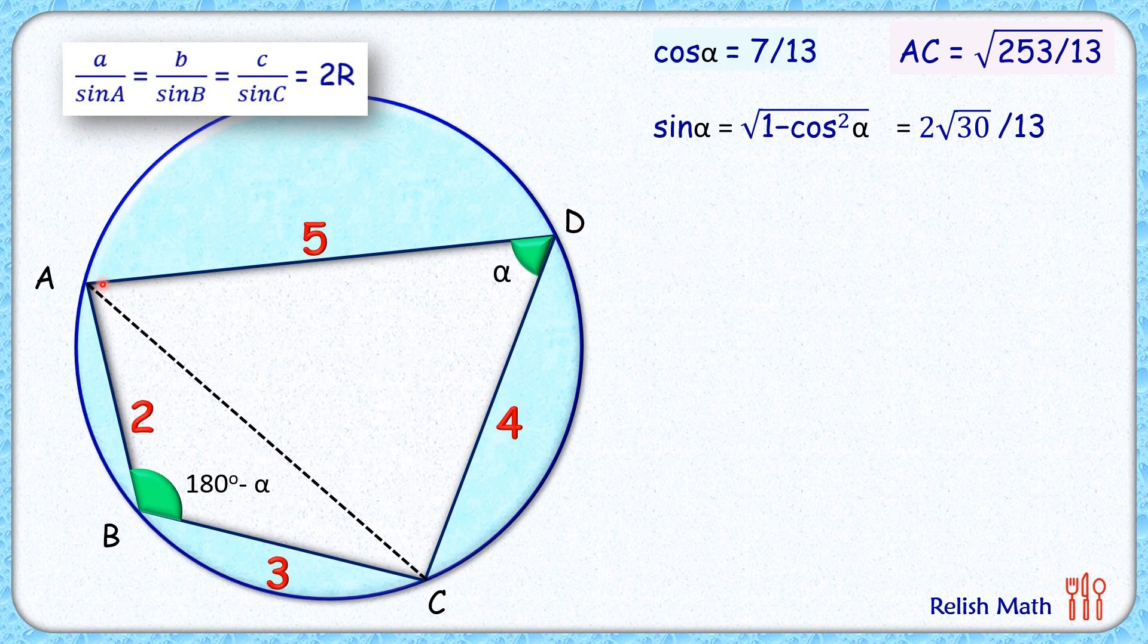So, instead of A, we'll take the side AC and sin A will become sin alpha. So we'll get AC upon sin alpha is 2 times the circumradius, or the radius of the circle which we have to find.